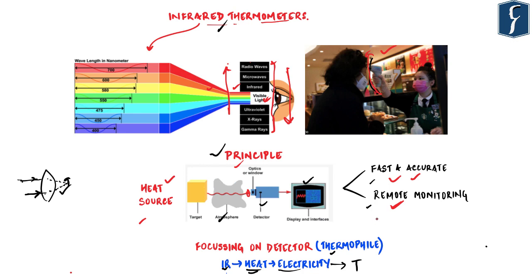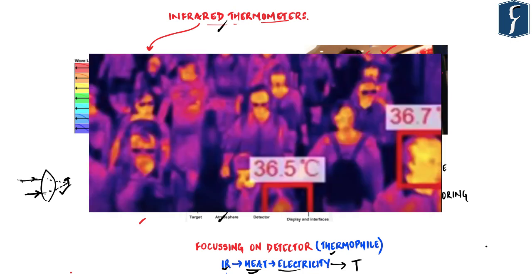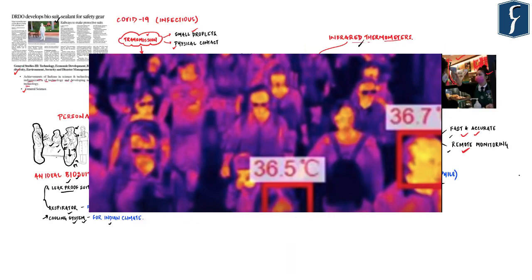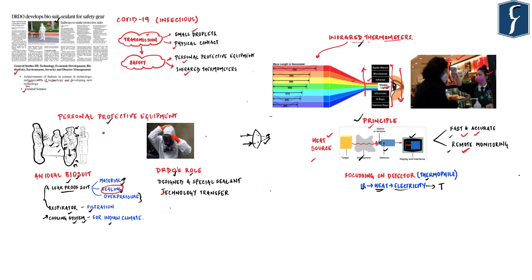Naval Dockyard Mumbai has designed and developed its own handheld infrared-based temperature sensor for screening at its entry gate. This is significant because an average daily influx of around 20,000 personnel means you cannot screen such large numbers with individual infrared thermometers — you need a system of mass screening. This discussion covers personal protective equipment essentials and the principle behind infrared thermometers. The PDF of this video is linked in the description for more details.